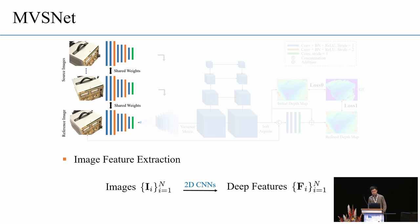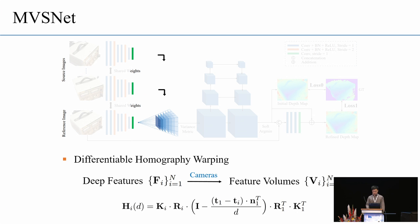And for the network, we first extract the deep image features of each image input through 2D convolutional layers. And then, these image features will be warped into the frontal parallel plane of the reference image according to the homography transformation. And we will form the feature volumes in the 3D space. So, this process is very much similar to the classical plane sweeping stereo. And it said that we use the differentiable bilinear interpolation to sample the features rather than sample the image pixels. And also the whole warping process is implemented in the differentiable manner.